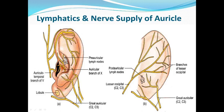Talking about lymphatic drainage: you can see the preauricular lymph nodes and the posterior auricular lymph nodes. All the lymph will drain into these two groups — the preauricular and postauricular lymph nodes — and some amount of lymph is also drained into the superficial cervical lymph nodes.